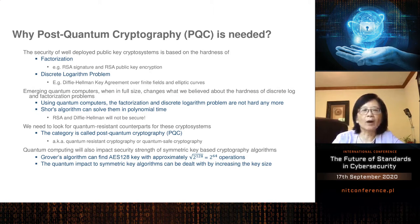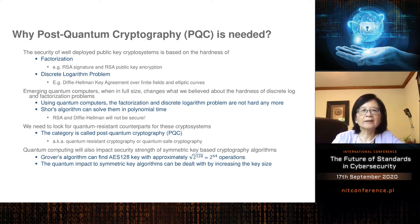I'd like to talk about why we need Post-Quantum Cryptography. Currently, most well-known public key cryptography schemes like RSA and Diffie-Hellman are based on certain hard problems. These problems are hard relative to classical computers, which is why RSA and Diffie-Hellman are secure.